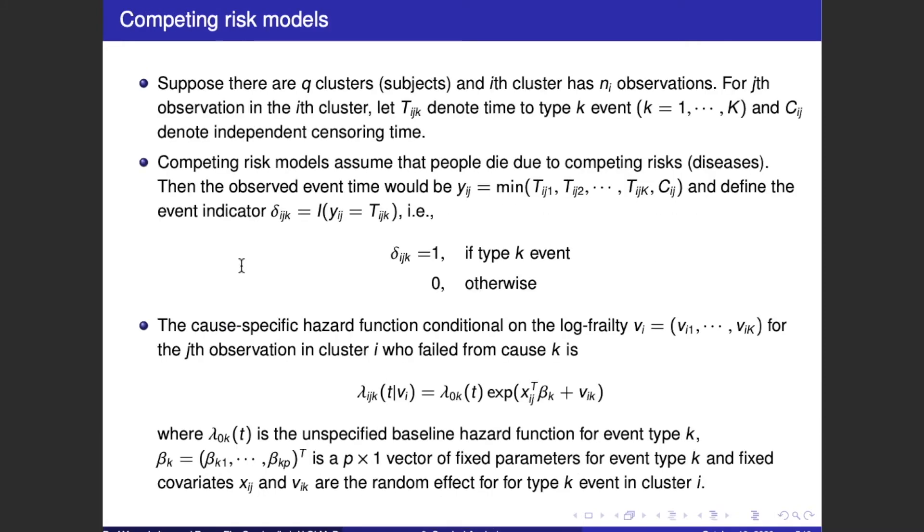Competing risk models. Suppose there are key clusters or subjects and each cluster has n observations. For j observations in the ith cluster, let T_ig denote time to type k event, k from 1 to K, and C denote independent censoring time.